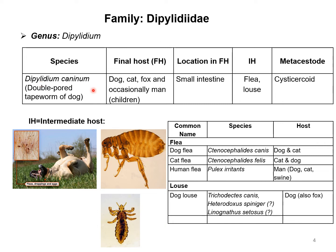Dipylidium caninum is also known as the double-pore tapeworm. This parasite is one of the commonest parasites in dogs in most parts of the world. The final hosts are dog, cat, fox, and occasionally humans — particularly children. This parasite is found in the small intestine of these hosts. The intermediate host for this parasite is the flea and the louse.